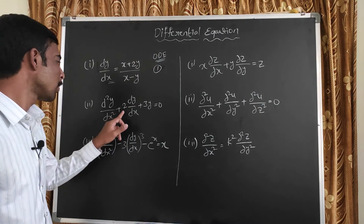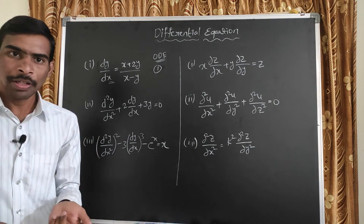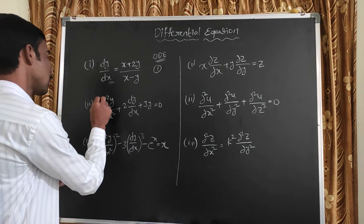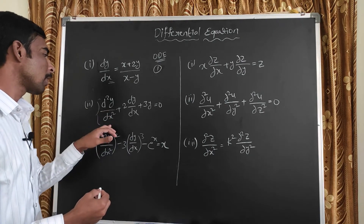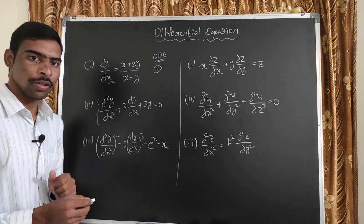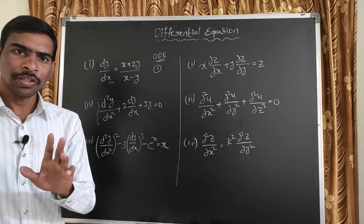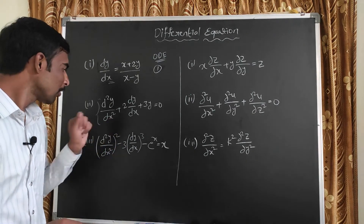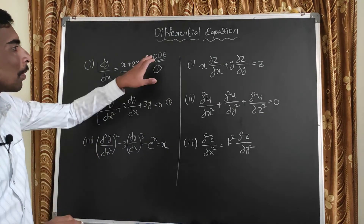Next example: d²y/dx² plus 2·dy/dx plus 3y equals 0. Here we have double-time derivation, but we differentiate the same variable x. First-time derivation is dy/dx, second-time derivation is d²y/dx². We differentiate only with respect to x — only one independent variable. So this is also an ordinary differential equation.